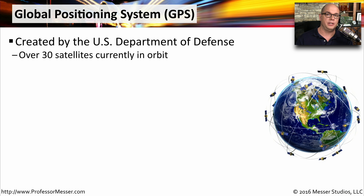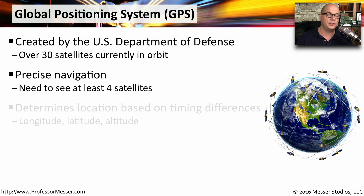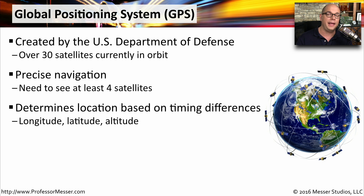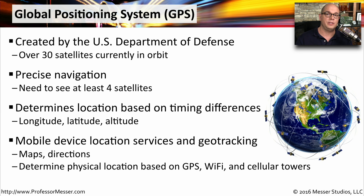The Global Positioning System, or GPS, was created by the US Department of Defense, and it consists of over 30 satellites that are orbiting the Earth. This allows us to get very precise navigation. As long as we can see four of these satellites, we're able to get very precise coordinates of our longitude, our latitude, and the altitude where we happen to be. On our mobile devices, we use this GPS functionality for our maps and directions. It might also be able to combine GPS with other types of technologies such as our Wi-Fi and our cellular towers to really triangulate where we might be.